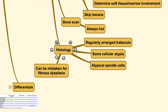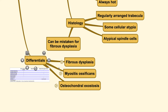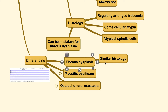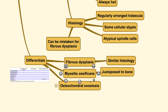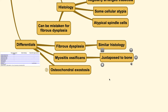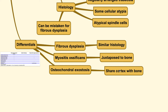Histology may sometimes be mistaken for fibrous dysplasia. There are spindle cells, and like most osteosarcomas, cellular atypia is present — meaning the cells are not uniform in size and shape, indicating malignancy. There may also be irregularly arranged trabeculae of bone. For differential diagnosis, it can be mistaken for fibrous dysplasia due to similar histology, myositis ossificans because the tumorous bone is adjacent to the bone, or osteochondral exostosis because the cortical bone is shared with the bone itself.